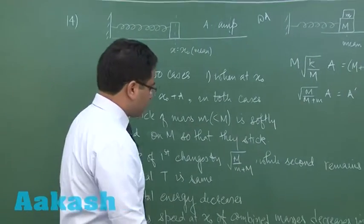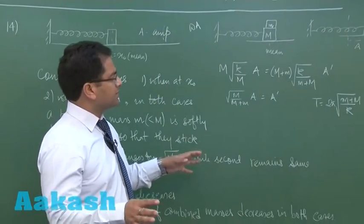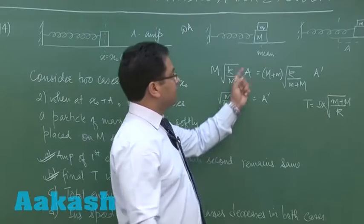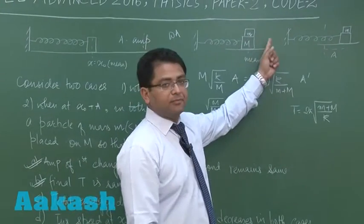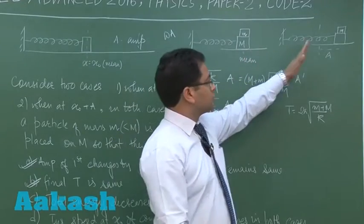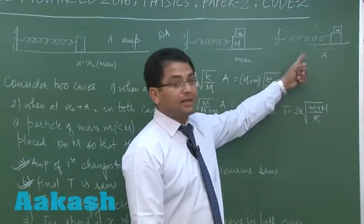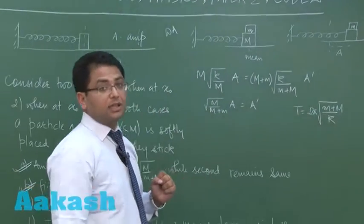Now let us try to see the total energy decreases. Instead of being mathematical, straight away you can see right here due to collision the energy is being lost. But here due to collision energy is not being lost. So in this case the energy decreases while in this case the energy does not decrease.